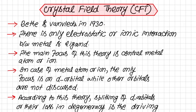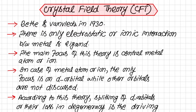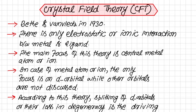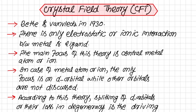First of all we shall see what are the main postulates of this theory. This theory was presented by Beth and Van Vleck in 1930. The main focus of this theory is that there is only electrostatic or ionic interaction between metal and ligand, and there is no coordinate covalent or covalent nature bond.